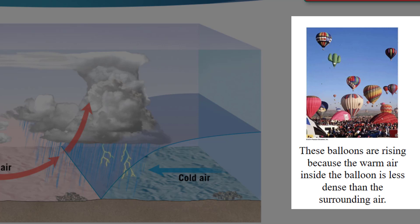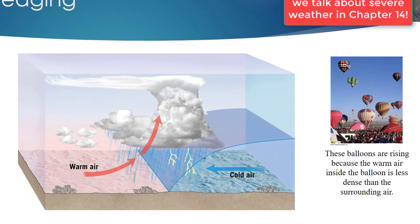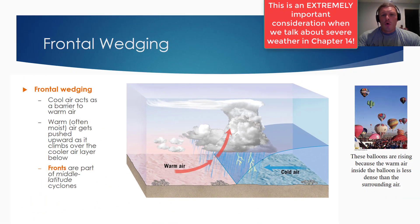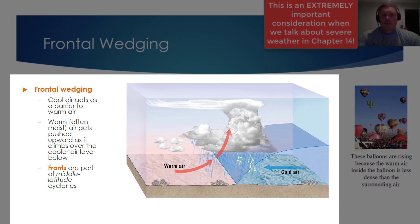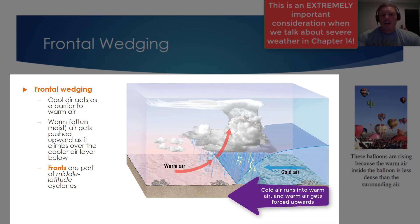Hot air balloons rise because the warm air inside the balloon is less dense than the surrounding air. We see this same density phenomenon in ice water — ice, which is less dense than water, will float. Applying that concept to warm and cold air: a very effective way of forcing air aloft is to have cold air smash into warm air. Because cold air is more dense than warm air, the cold air will act as a barrier to the warm air, and you can almost imagine the warm air crawling up the face of that cold air and getting forced aloft.